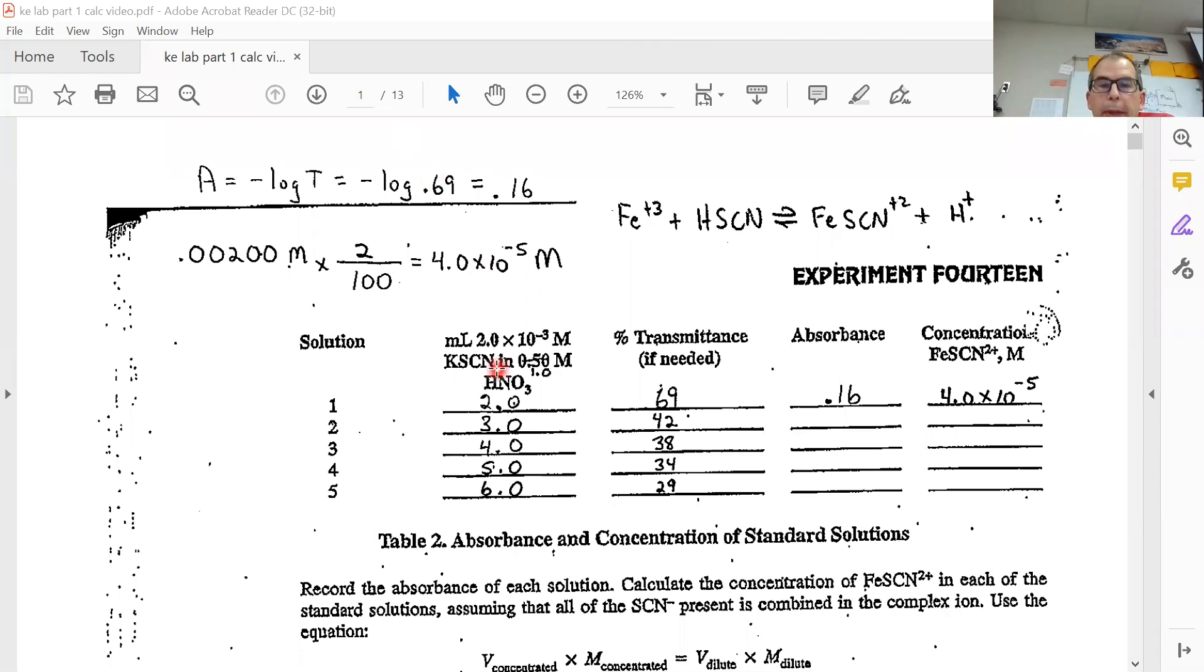So this was our independent variable. We chose to use two milliliters of 2.0 times 10 to the negative third molarity KSCN. We use two milliliters and then we use three milliliters for solution two, we use four milliliters for solution three, five for solution four, and six for solution five. So these were things that we pre-measured out using the pipettes.